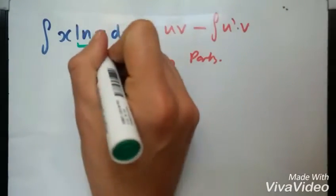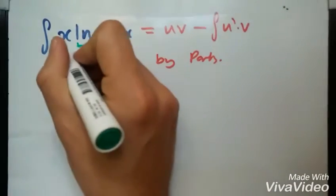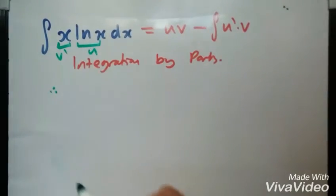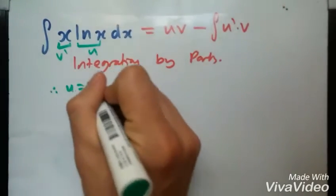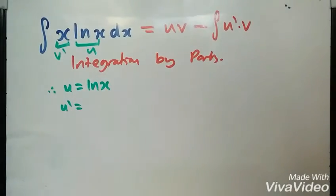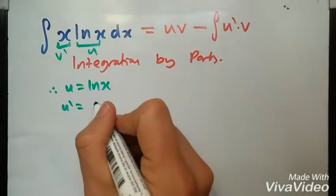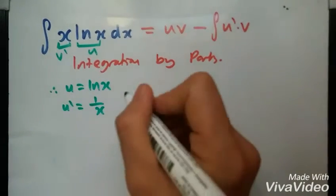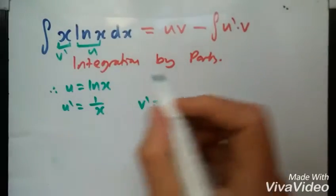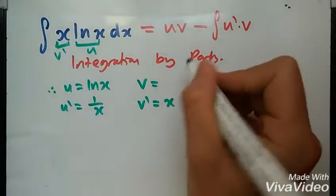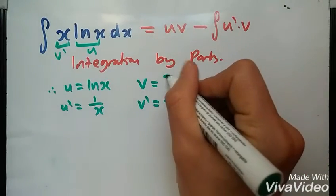Hence this is going to be v prime. So let's quickly just have a look at what they are. If u is the natural log, that means the first derivative of log x, if you remember, is 1 over x.